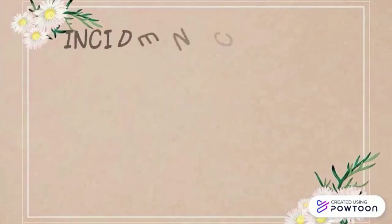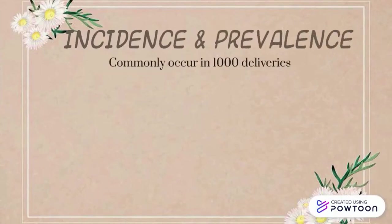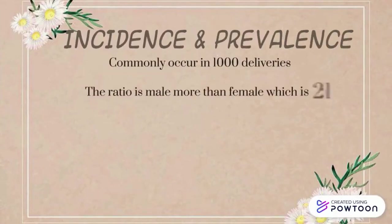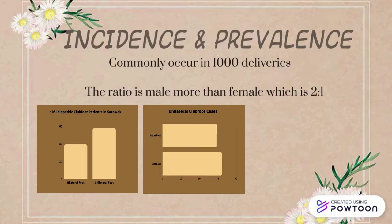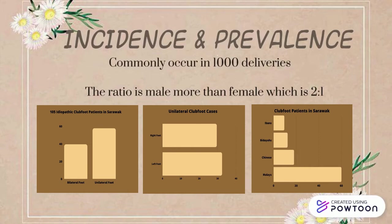Incidence and prevalence: clubfoot commonly occurs in 1 in 1000 deliveries. The male to female ratio is 2 to 1. In Sarawak, about 39.4% of cases had bilateral clubfoot while unilateral cases were about 57.7%. For unilateral clubfoot, the left foot at 32.4% is more commonly affected than the right foot at 29.5%. Malays had the highest percentage at 60%, followed by Chinese at 18.5%, Iban at 12.4%, and others at 9.5%.